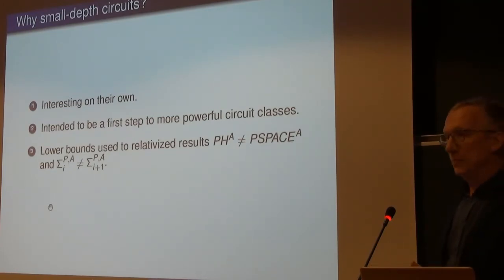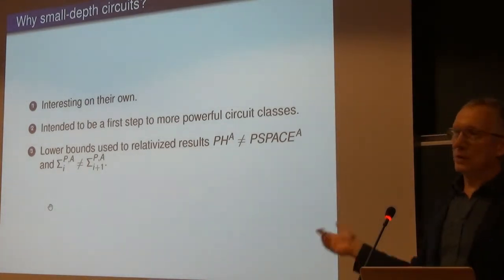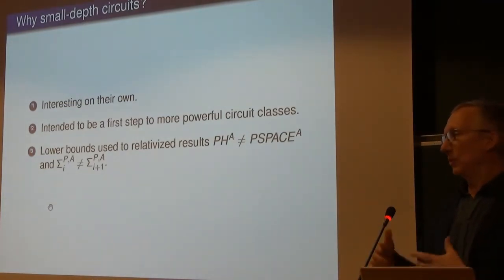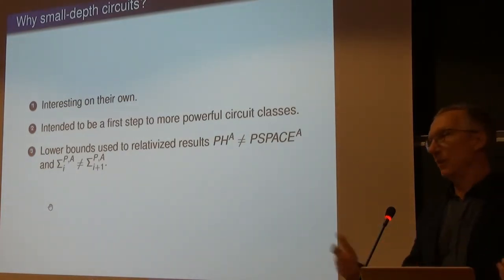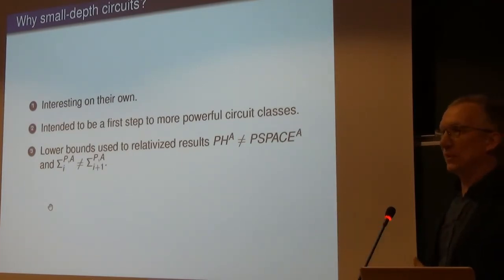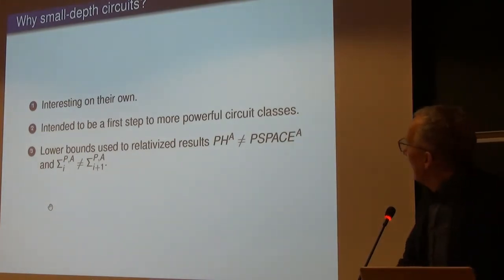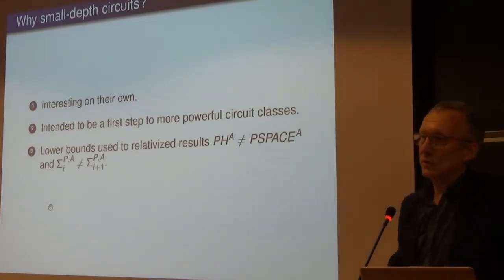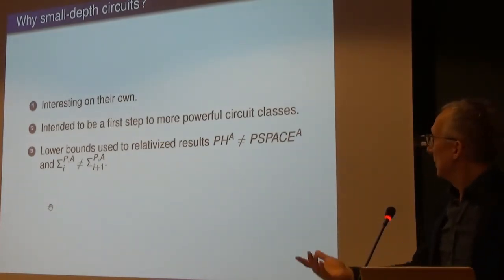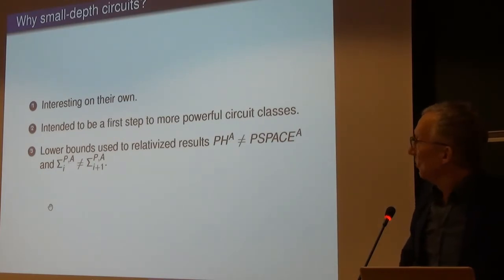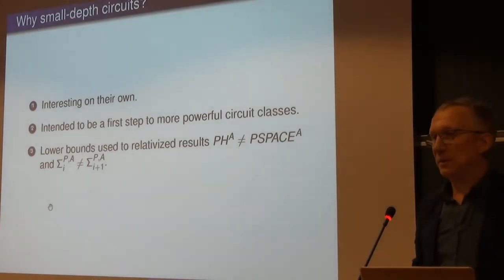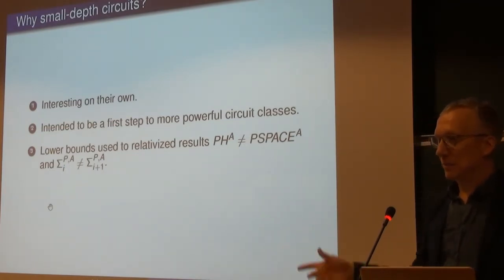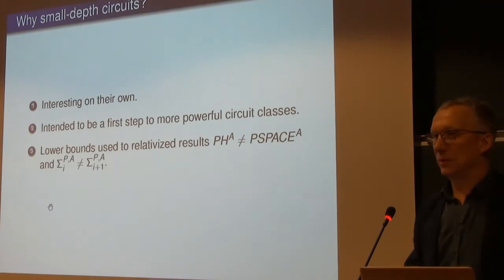Why look at these creatures? I think they're interesting on their own. When we started in the 1980s we said this is the simplest circuit class — once we prove lower bounds here, we'll move to higher depth, then NC1, then NP versus P. We got a few steps on that road but not as far as we thought. Also, lower bounds for constant depth circuits are the meat of proving that the polynomial time hierarchy is not included in PSPACE, or separating levels within the polynomial time hierarchy.